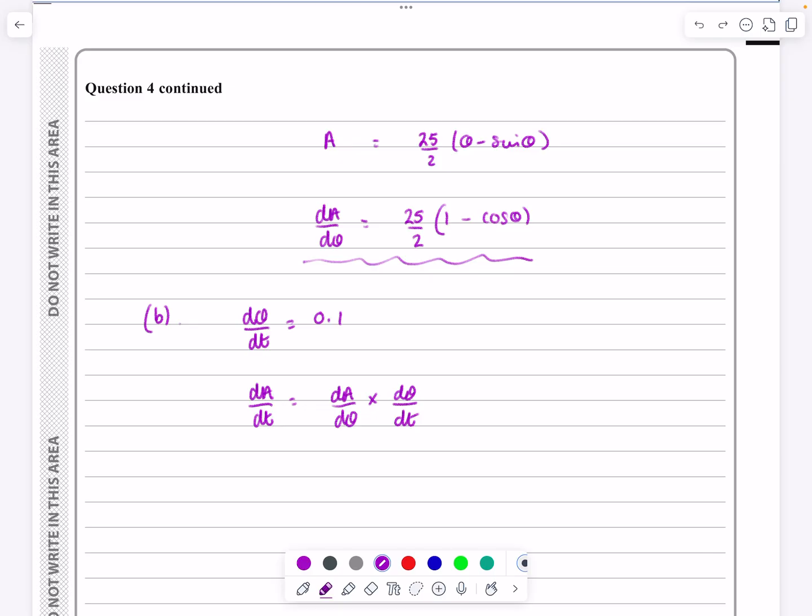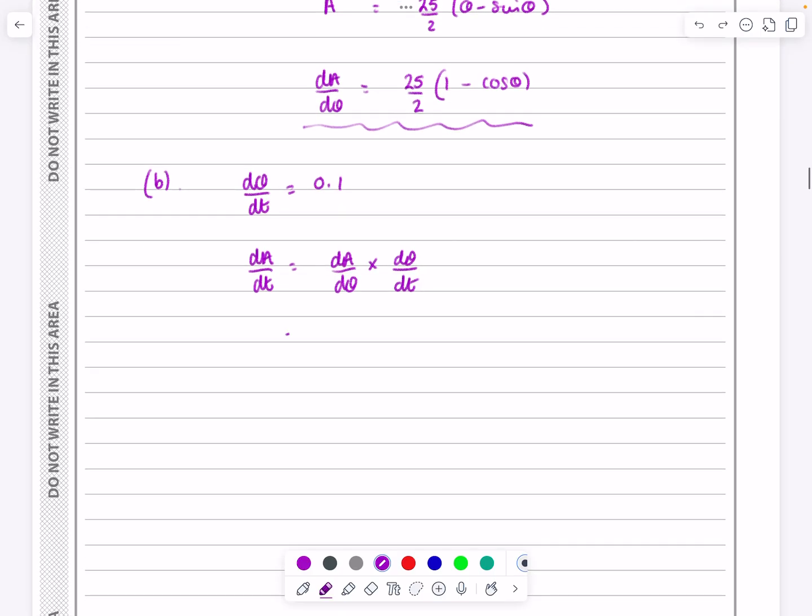Right, so that's everything that we've already got there. So dA by dθ was 25 over 2 times 1 minus cos theta, and dθ by dt was just equal to 0.1.